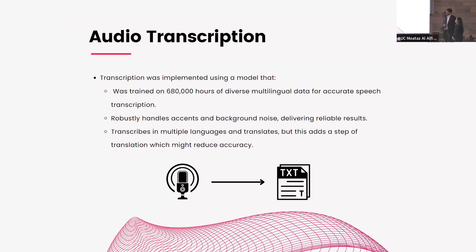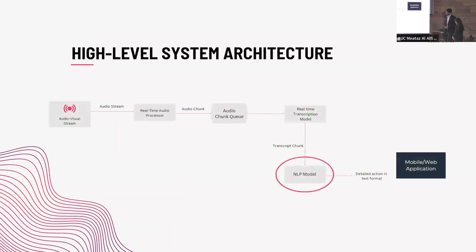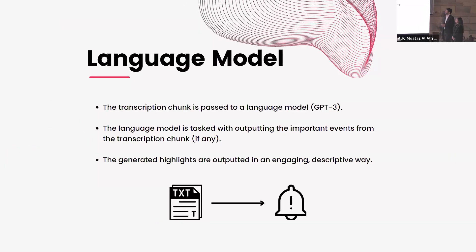The input to the transcription model is an audio chunk, and the output is a text file containing the transcript of the commentary in that chunk. For the NLP model, we need a language model to process the transcripts to find if there are any important actions happening. The language model we decided to work with is a GPT-3 model. It is tasked with outputting any important events happening in the transcript chunks, and the highlights are generated in an engaging and descriptive way. We take the transcript text file from the previous stage and process it to find any important events or highlights.